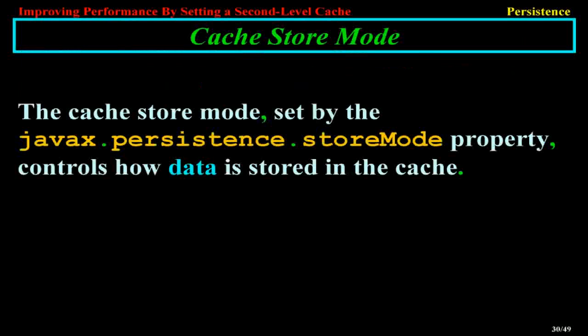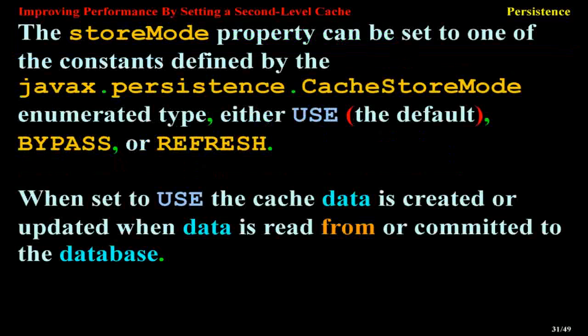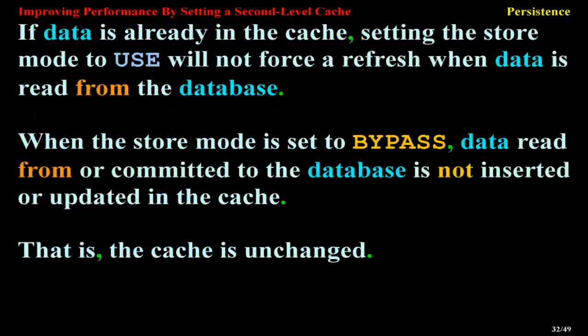Cache Store Mode. The cache store mode, set by the javax.persistence.cache.storeMode property, controls how data is stored in the cache. The storeMode property can be set to one of the constants defined by the javax.persistence.CacheStoreMode enumerated type: either USE (the default), BYPASS, or REFRESH. When set to USE, the cache data is created or updated when data is read from or committed to the database; setting the store mode to USE will not force a refresh when data is read from the database if data is already in the cache.